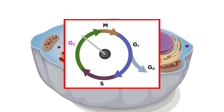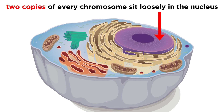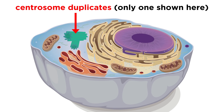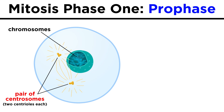Before mitosis begins, when the cell is still in the G2 phase of the cell cycle, we have two copies of all the chromosomes sitting in the nucleus, but they are loose and strewn about. In addition, the centrosome of the cell, which contains two centrioles, has duplicated, so there are two pairs of centrioles.